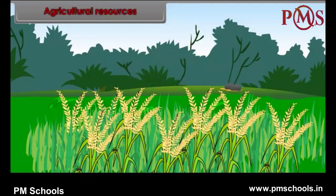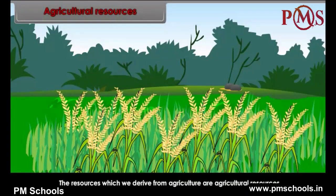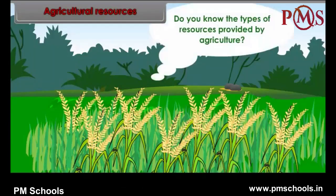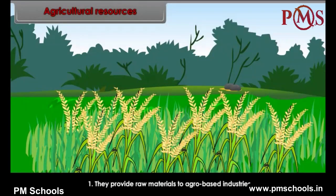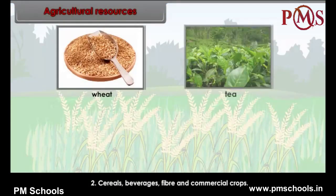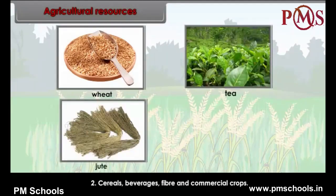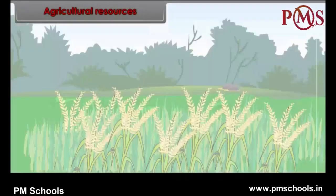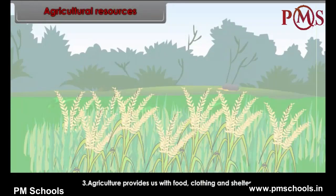The resources which we derive from agriculture are called agricultural resources. They provide raw materials to agro-based industries. Agriculture gives us cereals, beverages, fiber, and commercial crops, and provides us with food, clothing, and shelter.